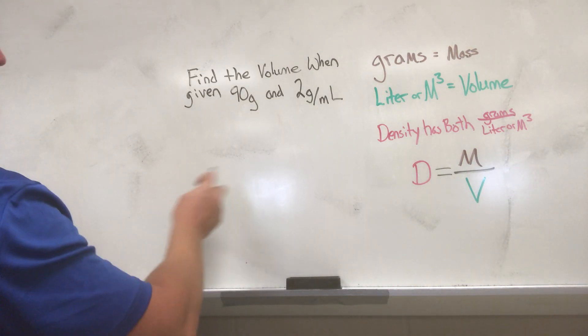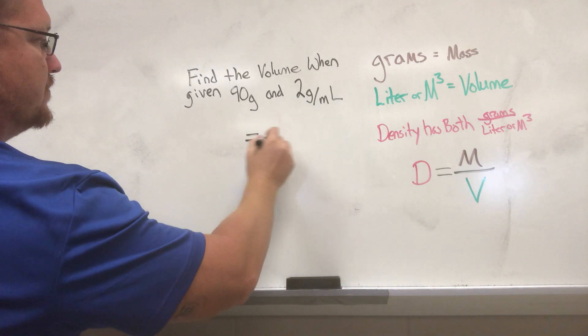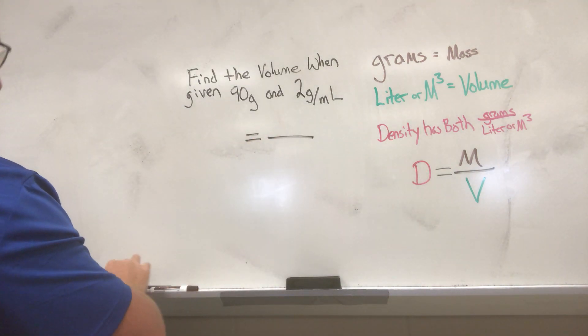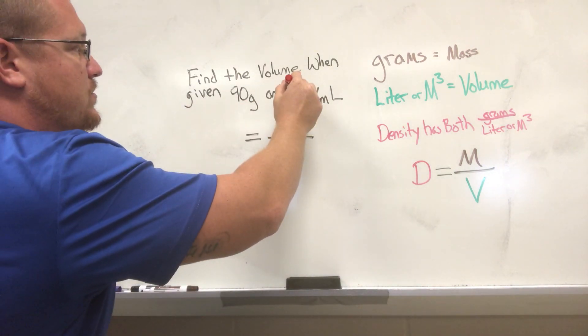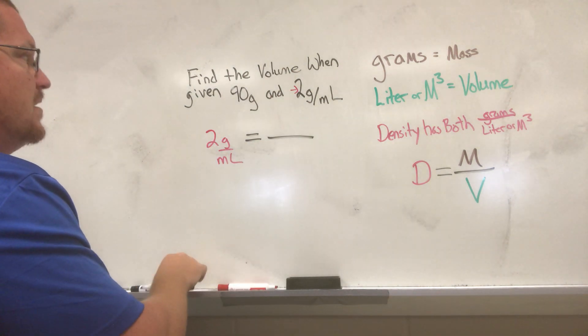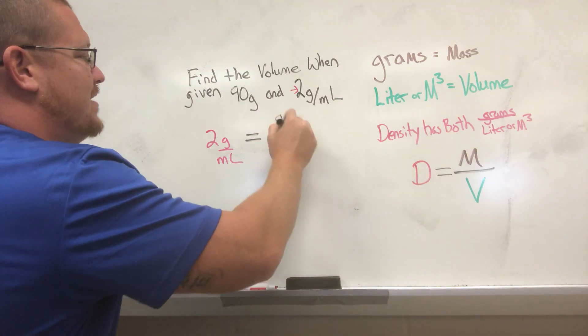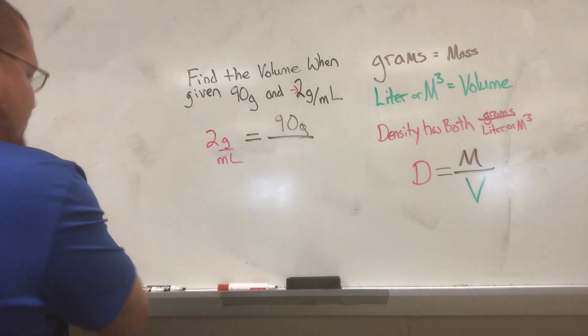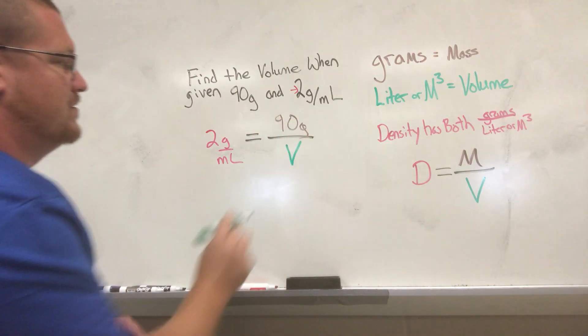So we're gonna plug that into our formula. Our density is 2 grams per milliliter, our mass is 90 grams, and we do not know what the volume is. We must solve for the volume.